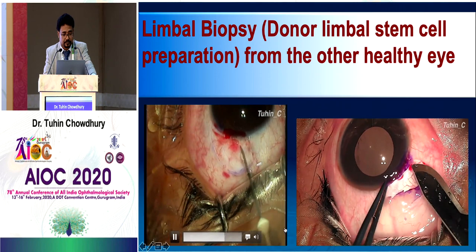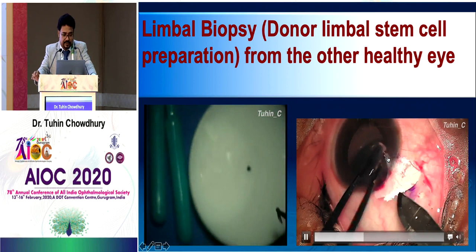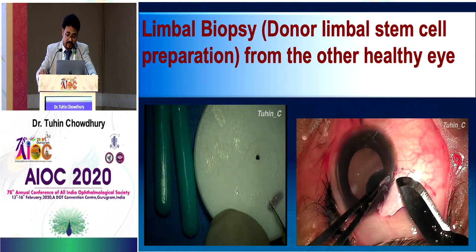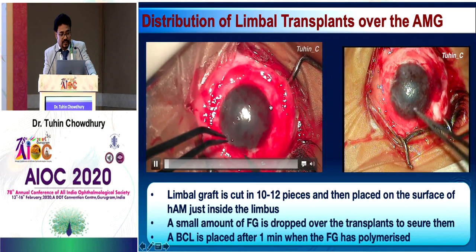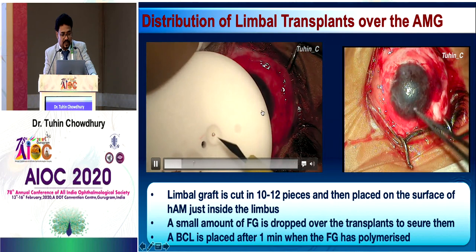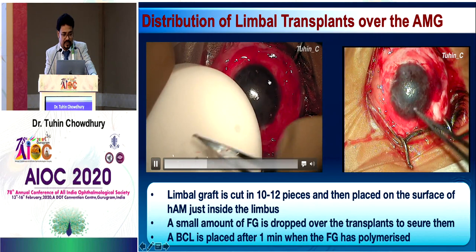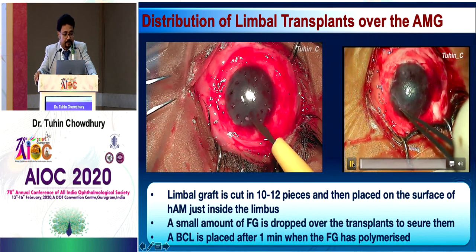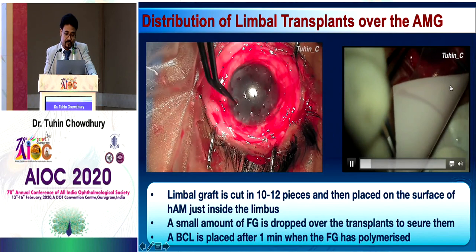The biopsy can be done from the limbal or bulbar side rather than the corneal side to avoid corneal perforation. The limbal graft is cut into 10 to 12 pieces and placed on the surface of the amniotic membrane just inside the limbus. The limbal tissue pieces will grow both centrally and peripherally, giving rise to normal epithelium. These are fixed using fibrin glue, or a double layer of amniotic membrane can be used to prevent dislodgement — especially important in children.